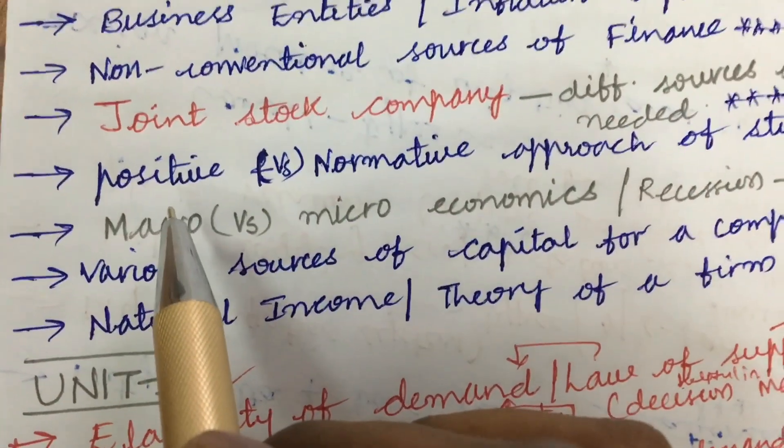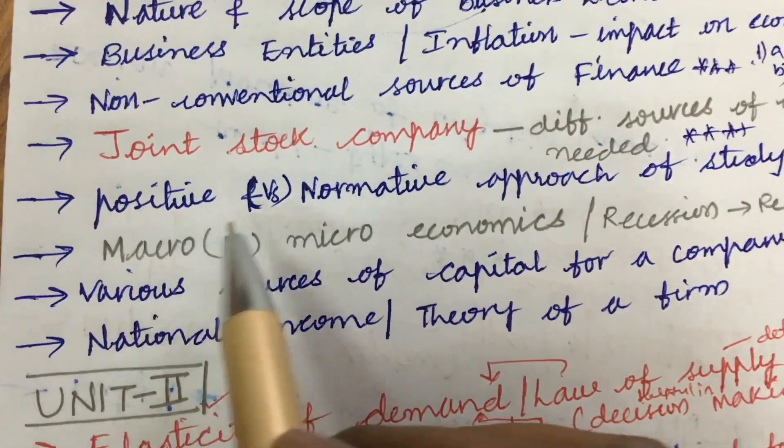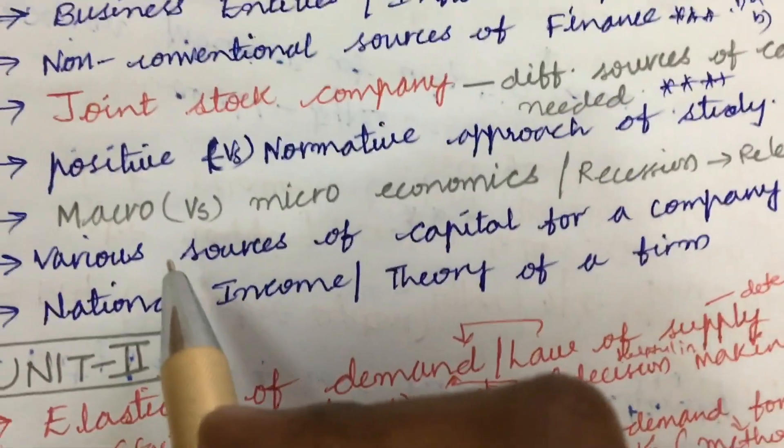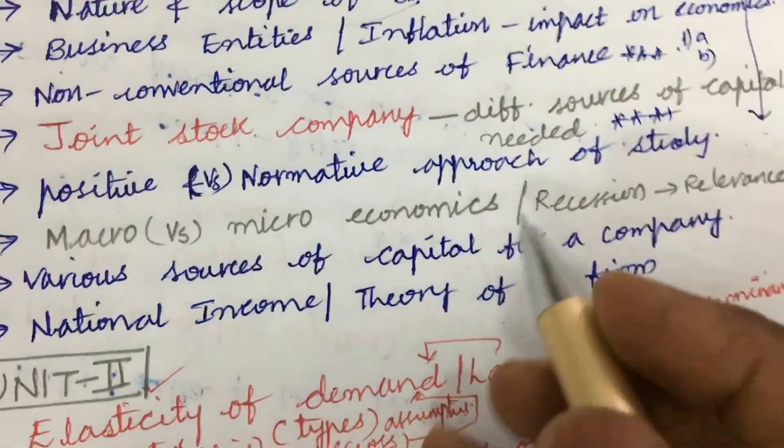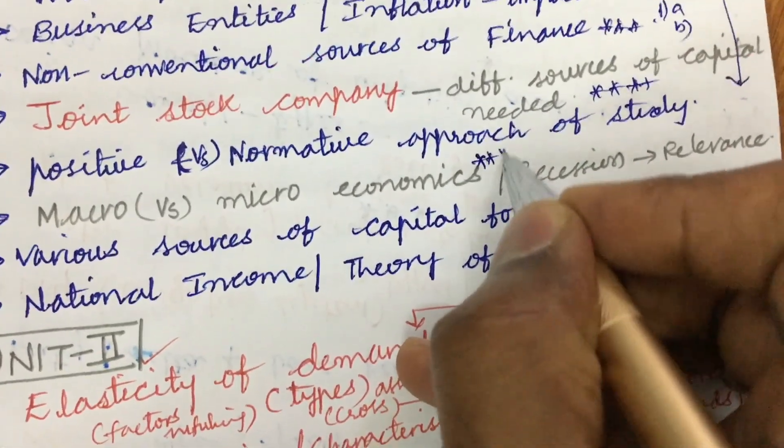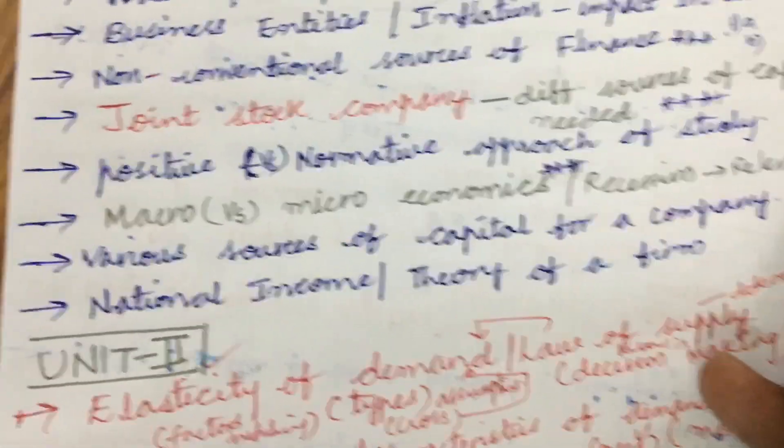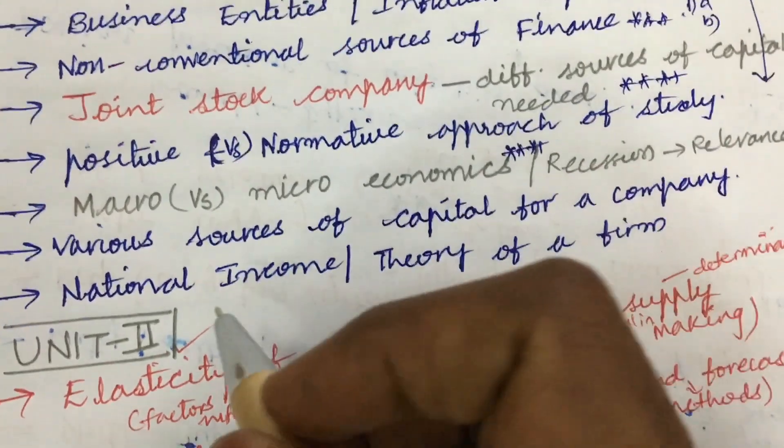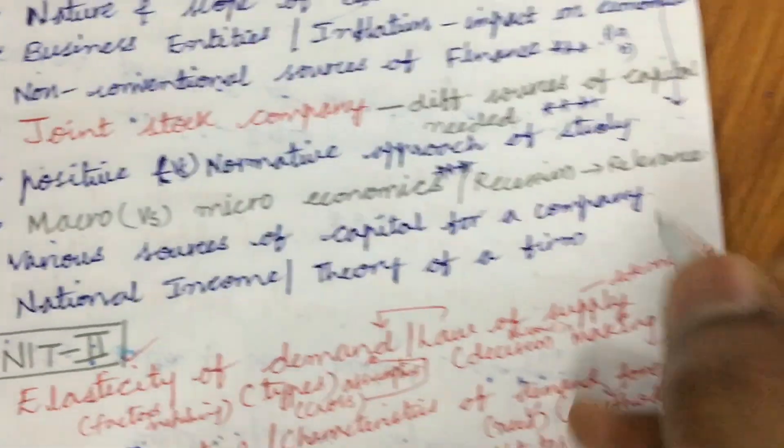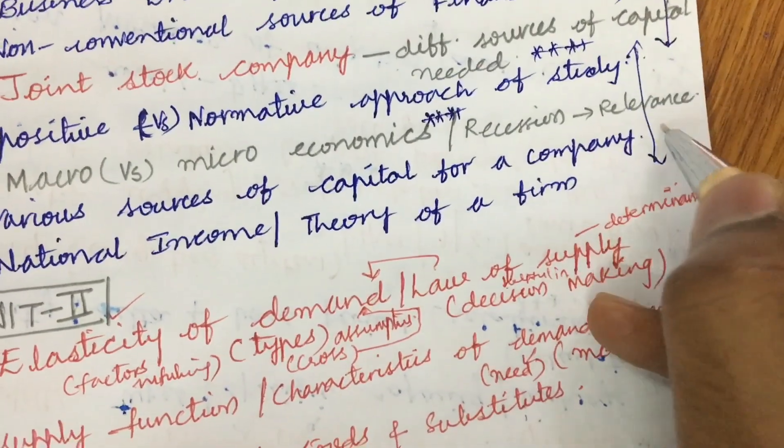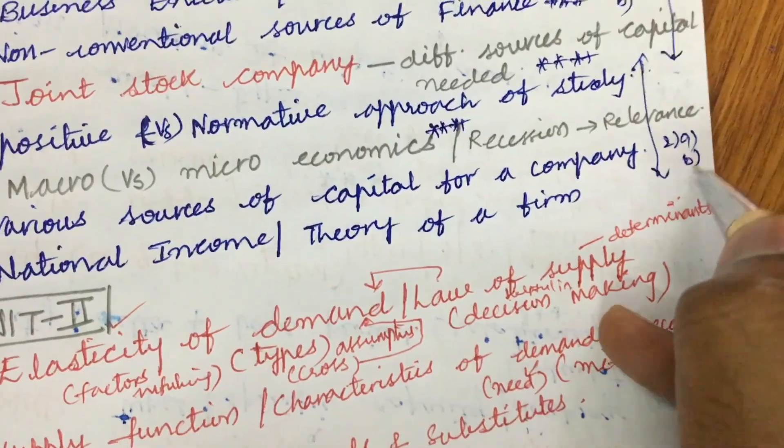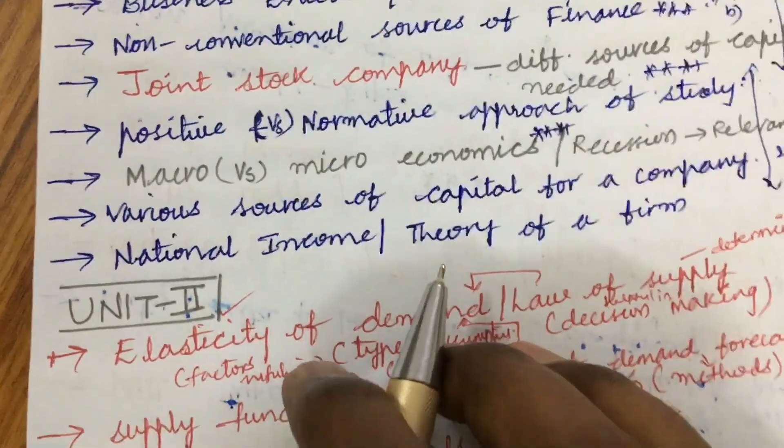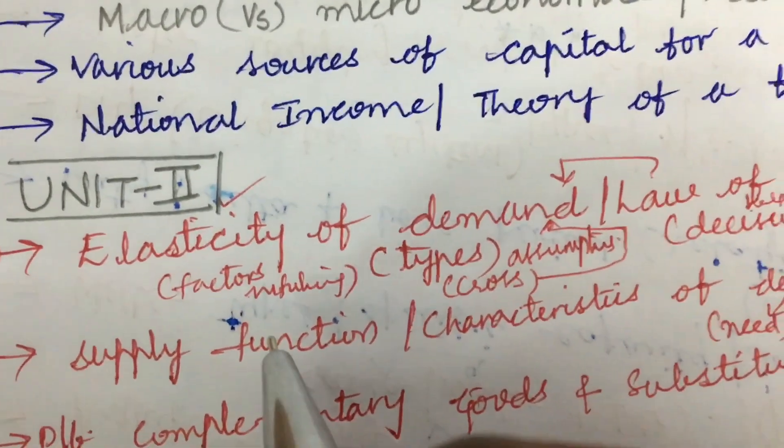Later, explain the differences between positive and normative approaches of study as well as macro versus microeconomics, a sure-shot question in the second part, as well as recession and its relevance. Later, various sources of capital for a company and national income and theory of a firm. From these concepts we can expect 2A as well as 2B, dear students. The first unit is all about theory. We can expect only theory questions. Let us look at Unit 2.